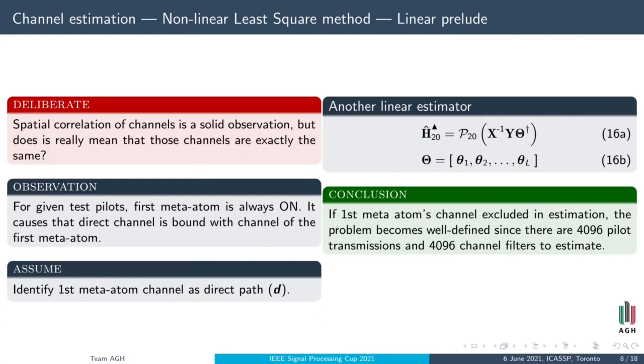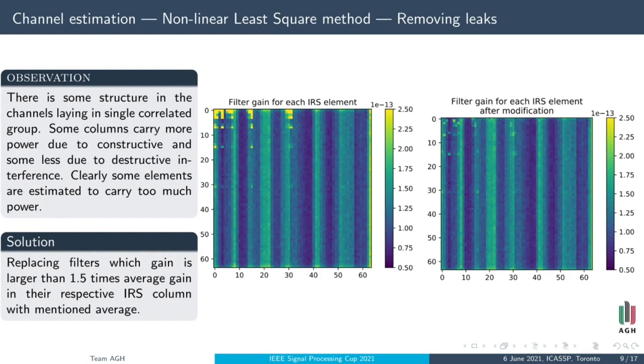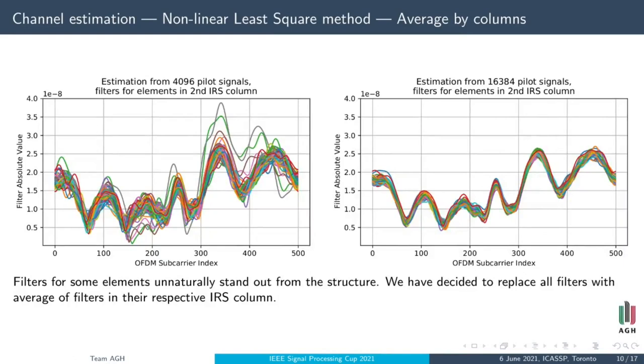But there are some problems. Some elements are estimated to carry too much power. We exclude those filters that have power higher than 1.5 times average power in the column and put average of filters in column there. After that, we can see that some filters are wrongly estimated. On the right-hand side, we can see reference least-square estimate from the first dataset. Filters are quite correlated there, but in our estimation, they are not. So to achieve correlation, we calculate average of all filters in the column and keep only this value as one filter per each column.